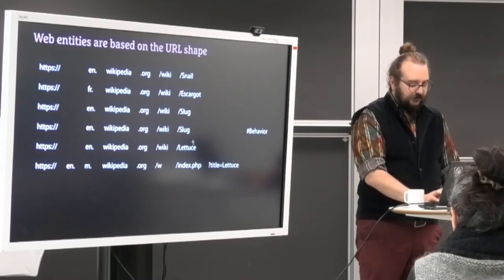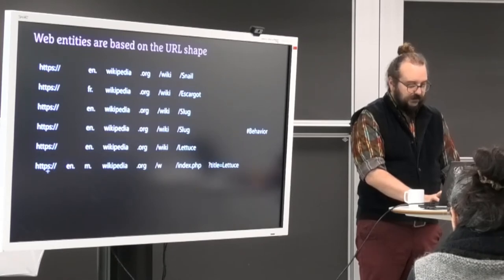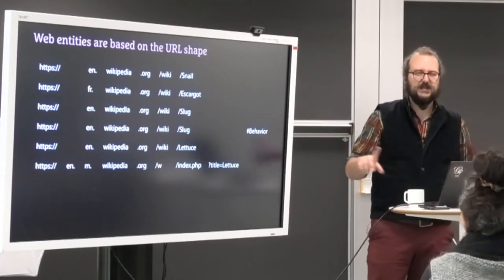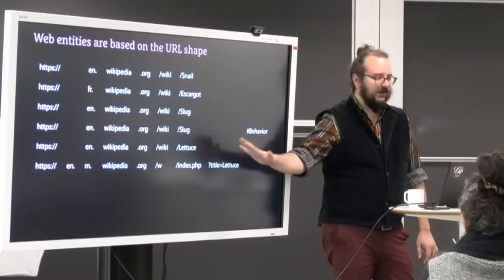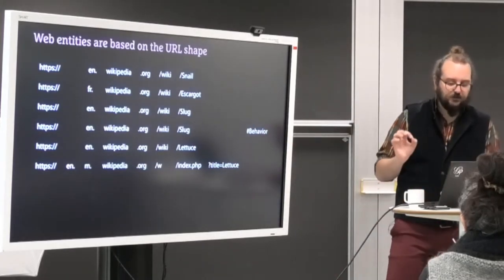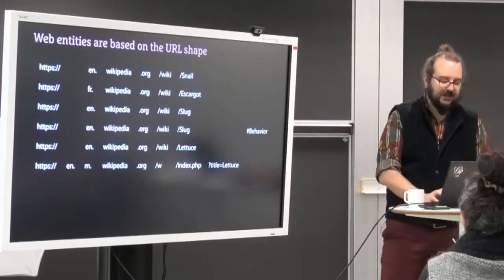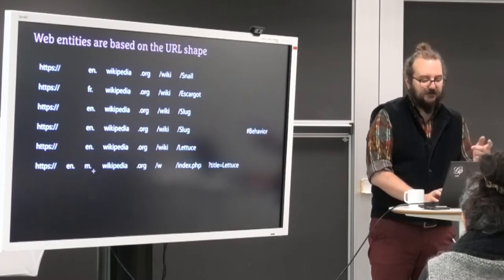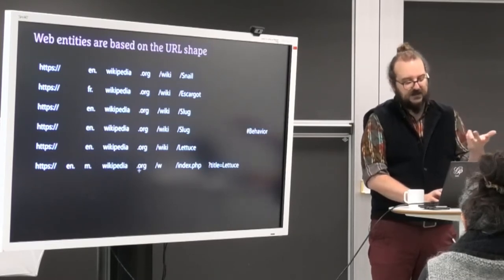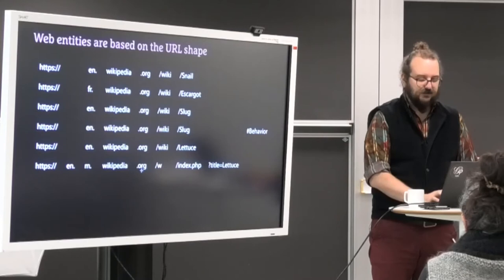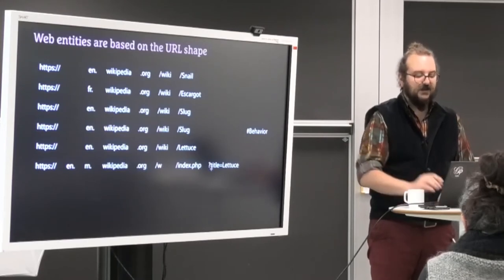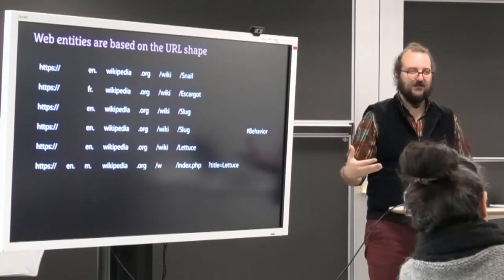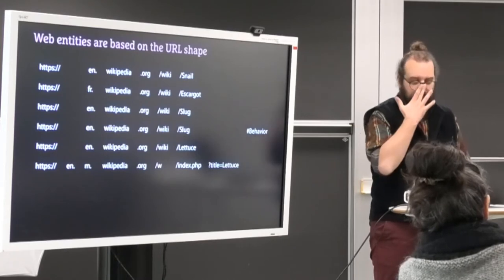This is another page on the lettuce. Once again, nice like the slug. And then you have the page about the lettuce in the mobile version of Wikipedia. Now it may have changed, but let's say it's like that. It used to be like that. So when you go into a mobile version of Wikipedia, you have a new subdomain here. So it's not en.wikipedia.org. It's en.m for mobile.wikipedia.org. And then the structure changes. You just have the slash w slash index.php. And then query mark title equals lettuce. So there's different syntax for the mobile pages on Wikipedia for some reason.